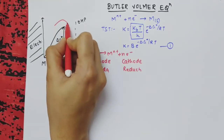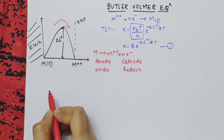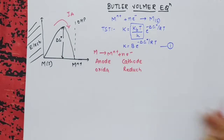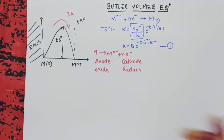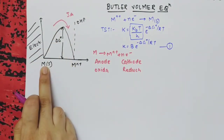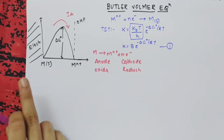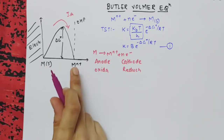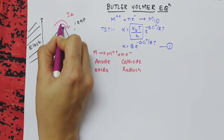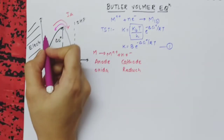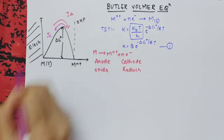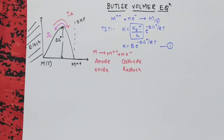The direction of ionic current from the anode is the anodic current. In the opposite direction, M^(n+) is converting into metal solid, which is the reduction at the cathode. The current for this process is the cathodic current, IC.